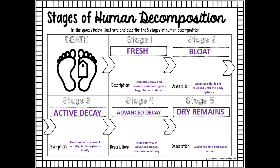In stage three, active decay, a lot of insects show up and begin feeding on the body. Fluids released through orifices of the body indicate the beginning of active decay. Your organs, muscles, and skin become liquefied as the body's soft tissue decomposes, and hair, bones, and cartilage remain. When that activity subsides and there is great mass loss, that is stage four — advanced decay. During active and advanced decay, the body loses most of its mass.